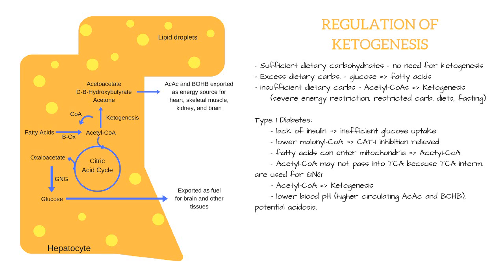In pathologic conditions, this may lead to acidosis, where circulating acetoacetate and beta-hydroxybutyrate decrease blood pH. This is something to be avoided, especially in type 1 diabetes, when endogenous self-regulation of insulin is not possible.